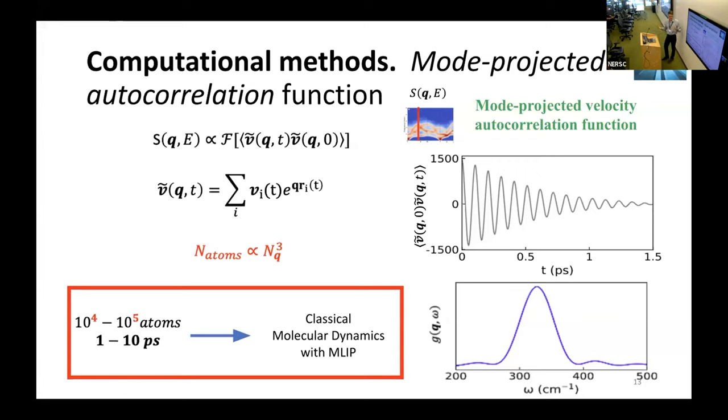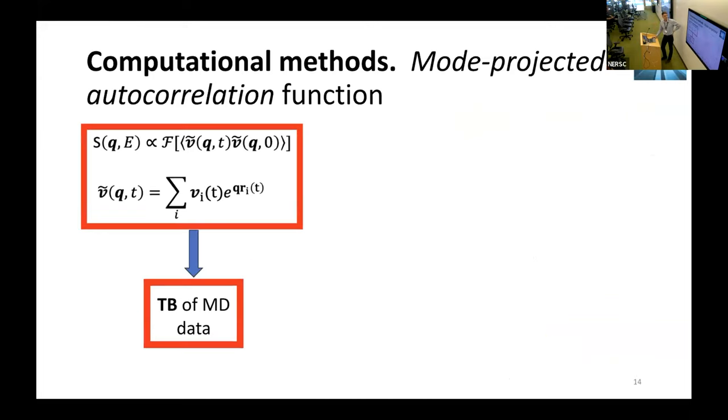Not to be confused, 10 picoseconds is only a single trajectory, but we needed 20 of those for statistical convergence. Because of this, quantum molecular dynamic simulations are not applicable anymore. But we have classical molecular dynamic simulations with machine learning atomic potentials.